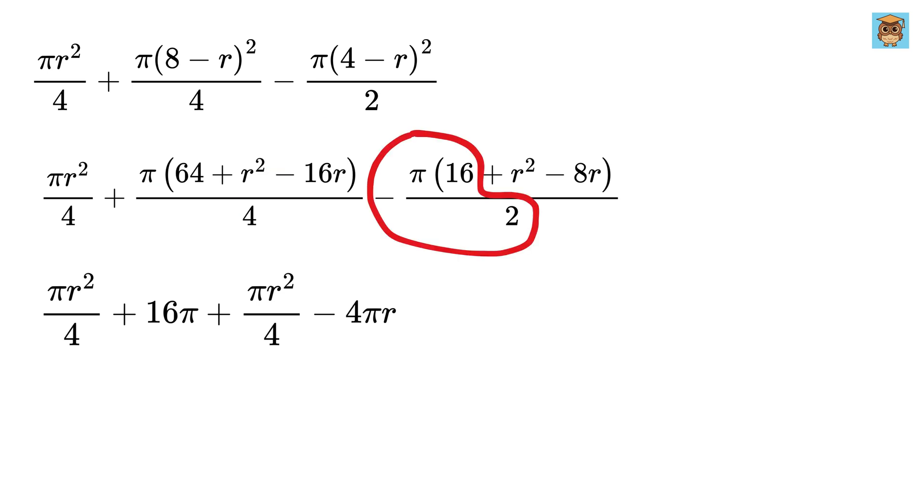Now, this will be minus 16 over 2, or 8 pi. This will be minus pi r square over 2. And then this will be 8 pi r over 2, or 4 pi r.